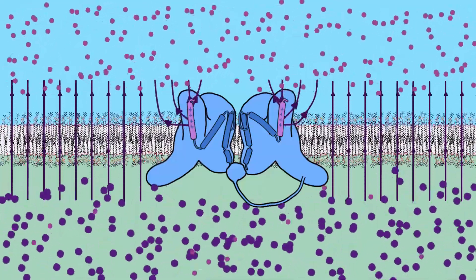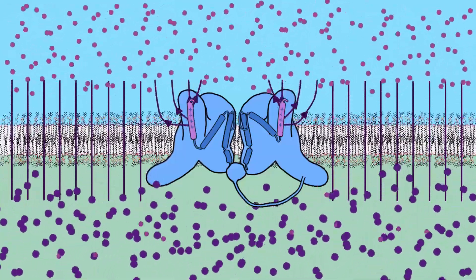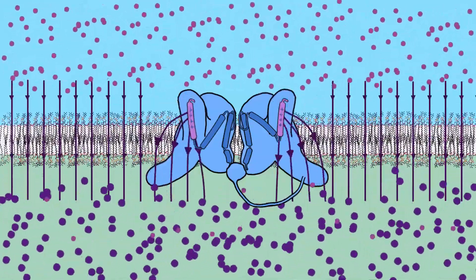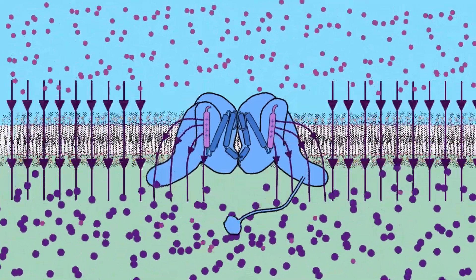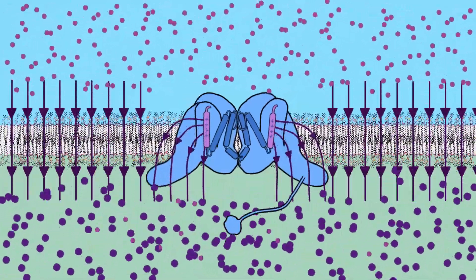When the voltage returns to less than minus 50 millivolts, the positive segments of the protein are attracted towards the interior of the membrane, closing the pore.